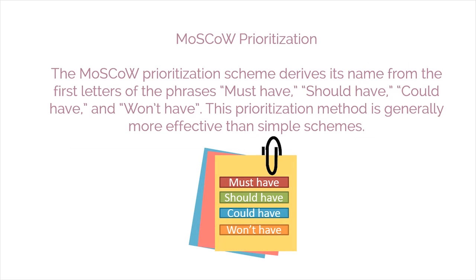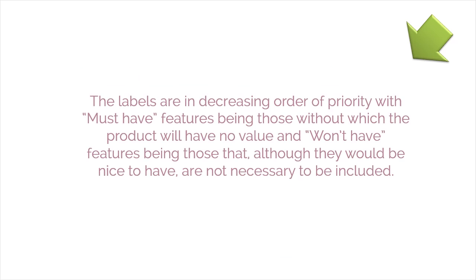MoSCoW prioritization derives its name from the first letters of the phrase: must have, should have, could have, and won't have. This prioritization method is generally more effective than simple schemes. The labels are in decreasing order of priority, with must-have features being those without which the product will have no value, and won't-have features being those that, although they would be nice to have, are not necessary to be included.